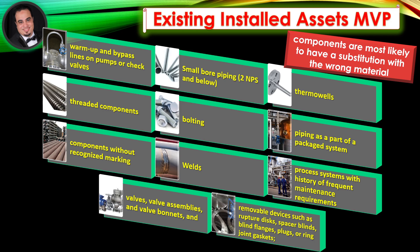Examples of component types most likely to have a substitution with the wrong material include: warm-up and bypass lines on pumps or check valves; small bore piping, 2 NPS and below; thermowells; threaded components; bolting; piping as part of a packaged system; components without recognized marking; welds; process systems with a history of frequent maintenance requirements; valves, valve assemblies, and valve bonnets; and removable devices such as rupture discs, spacer blinds, blind flanges, plugs, or ring joint gaskets.